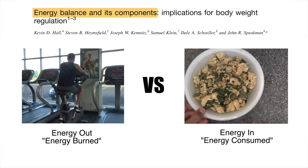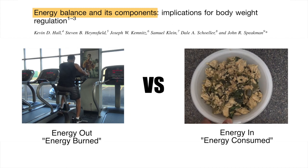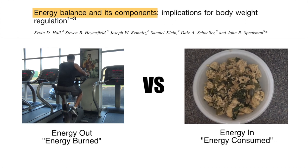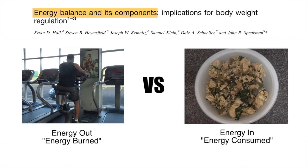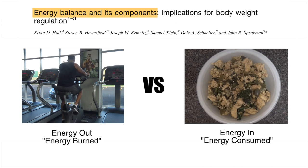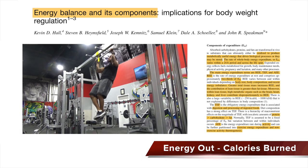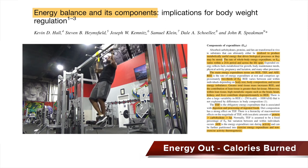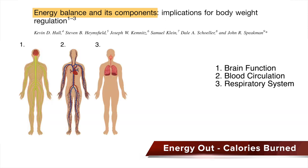Energy balance plays the largest role in weight gain or weight loss. It refers to the balance between the amount of energy burned versus the amount of energy consumed. A 2012 consensus statement by Kevin Hall and others covered the different ways that the body burns energy. Even while resting, the body is using energy for things like brain function, blood circulation, and breathing. This is referred to as the resting metabolic rate and accounts for up to two-thirds of energy expenditure.